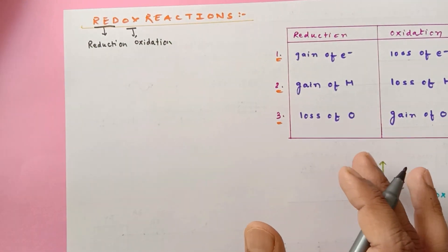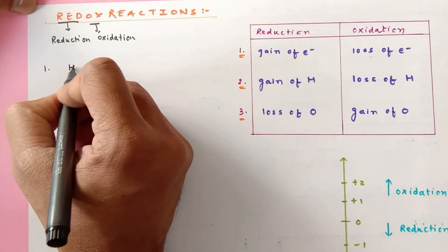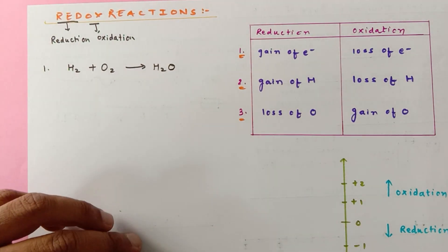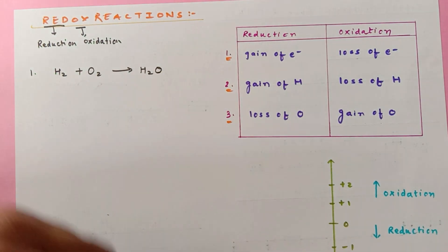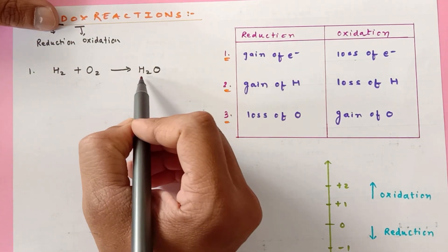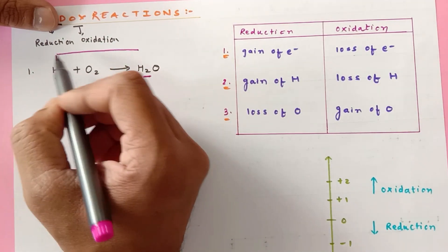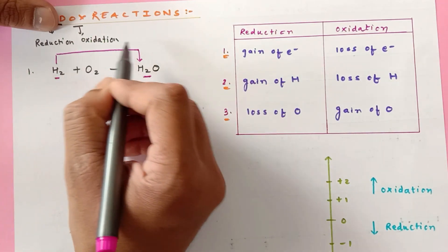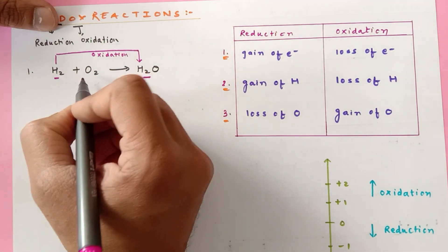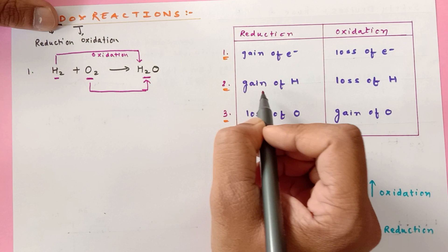Let's apply these concepts on a chemical reaction. The first example is H₂ + O₂ → H₂O, the formation of water. When hydrogen and oxygen are given a spark they react, finally producing water. If you look carefully, hydrogen gains oxygen to form water — hydrogen was not having oxygen, but in the product hydrogen has oxygen. So hydrogen has gained oxygen, which falls under oxidation. Oxygen, on the other hand, turned into water — meaning it gained hydrogen, and gain of hydrogen falls into the reduction category.